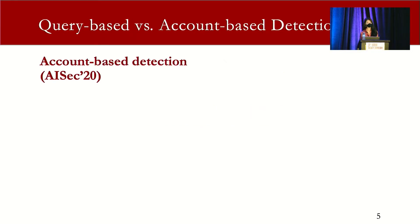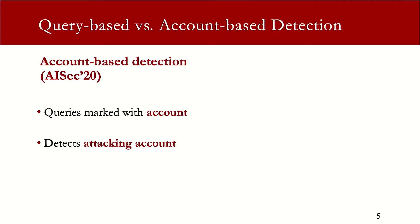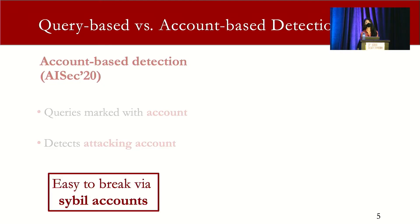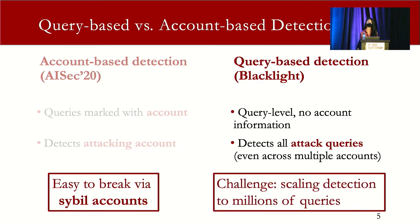There is only one existing defense against query-based attack, which is an account-based detection method from AI Sec. It marks each query with the account sending them and detects the attacking account. However, it is easy to bypass using multiple Sybil accounts. In this work, we propose a query-based detection with no account information. We detect all attack queries even if they are sent across multiple accounts. The challenge here is how do we do scalable detection for millions of queries.